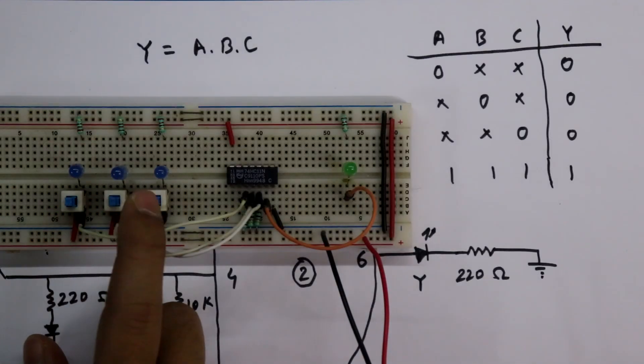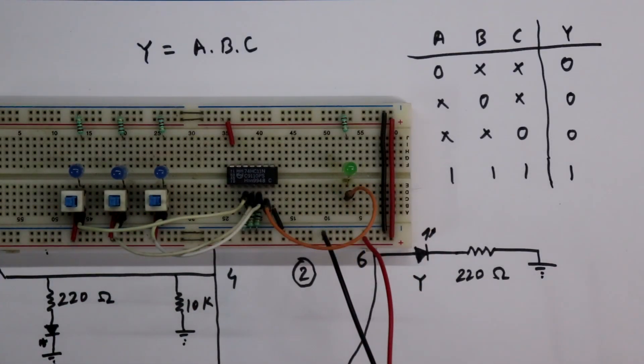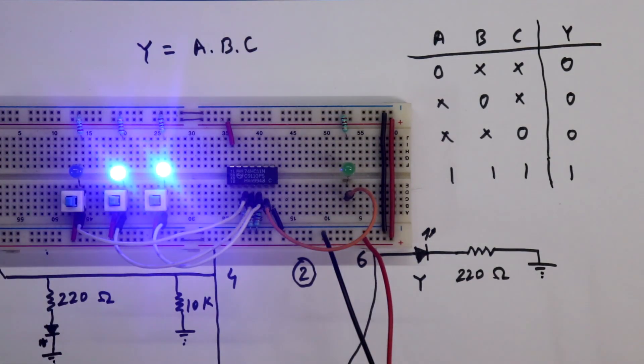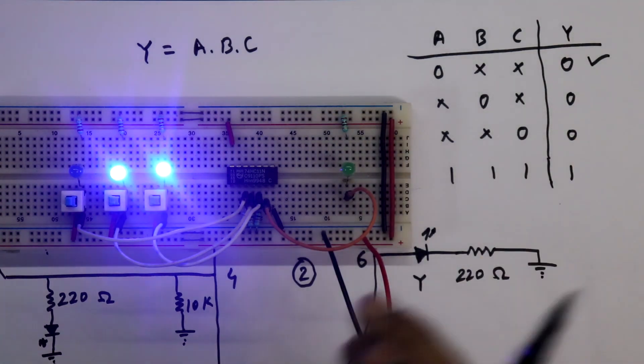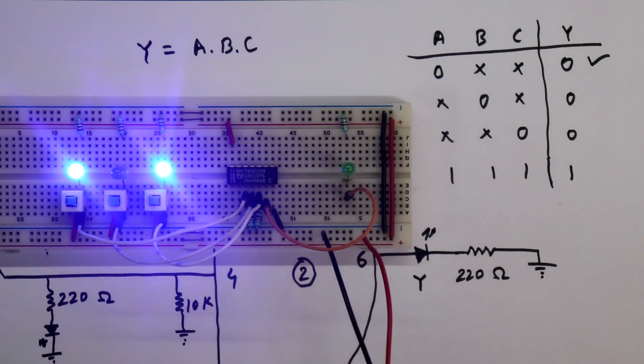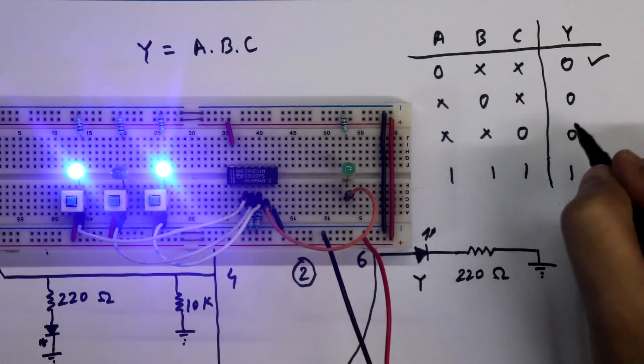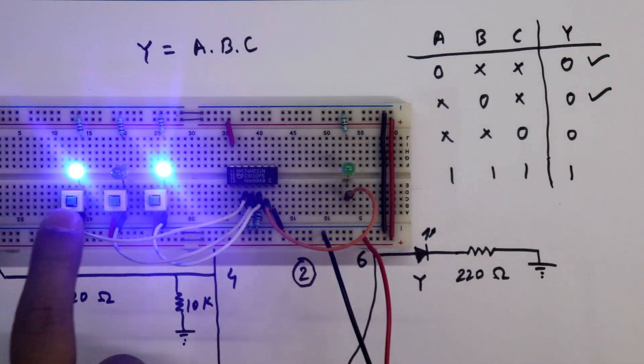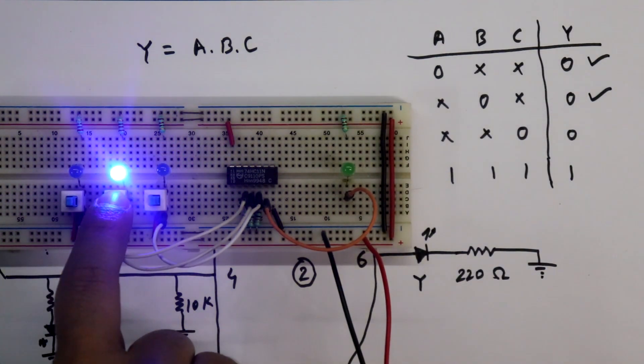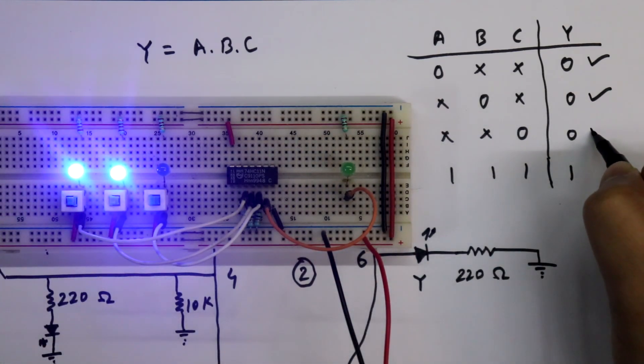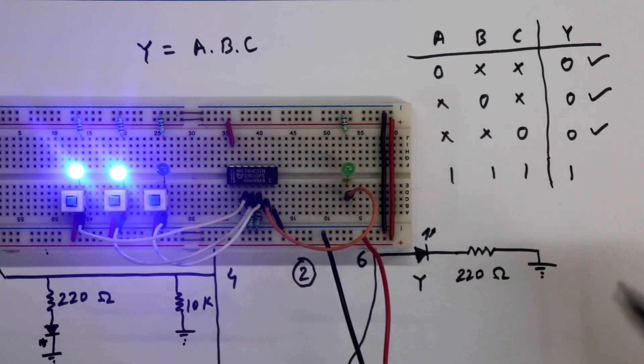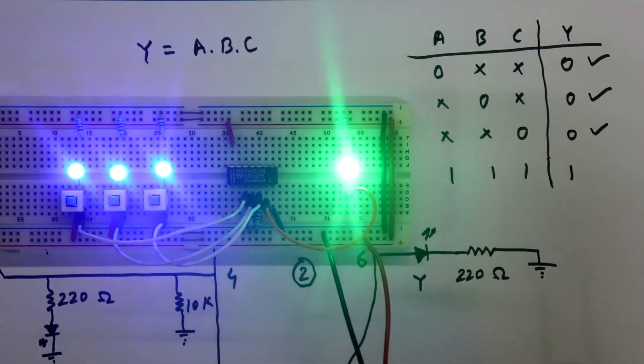All the inputs are 0, we are getting 0. Any input is 0, we are getting 0. We are getting 0. Here we are getting 0. If all the inputs are 1, we will get 1. So this is how a 3-input AND gate works.